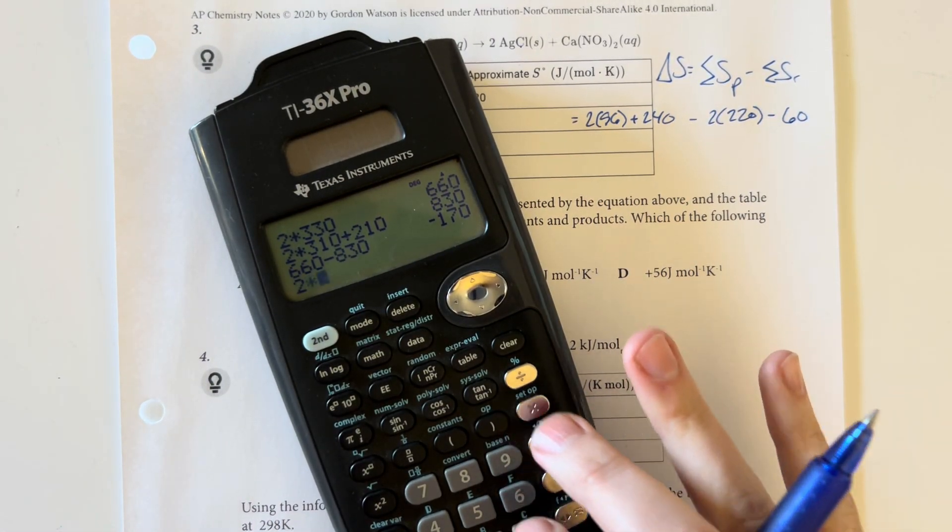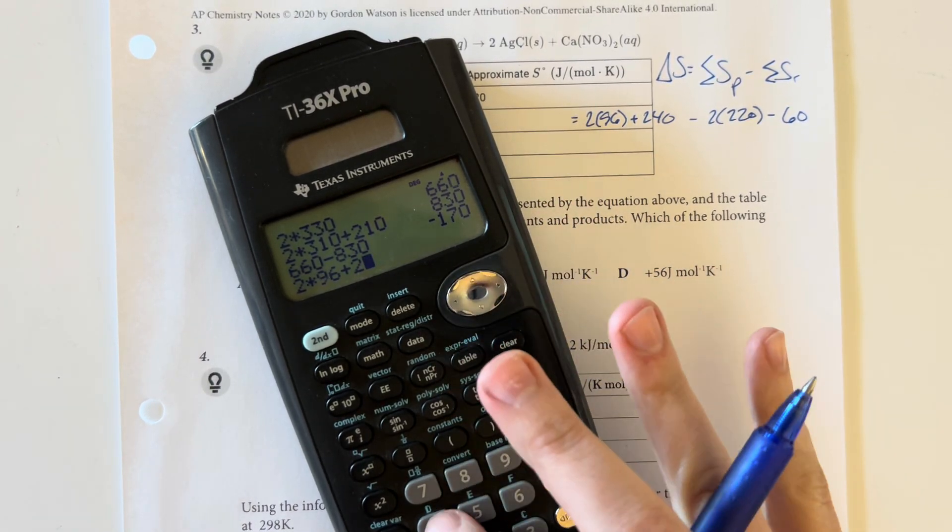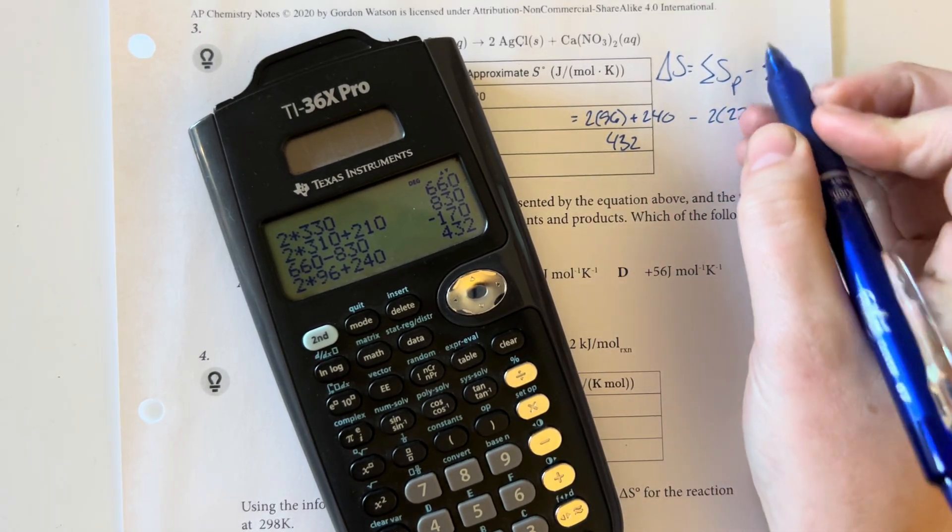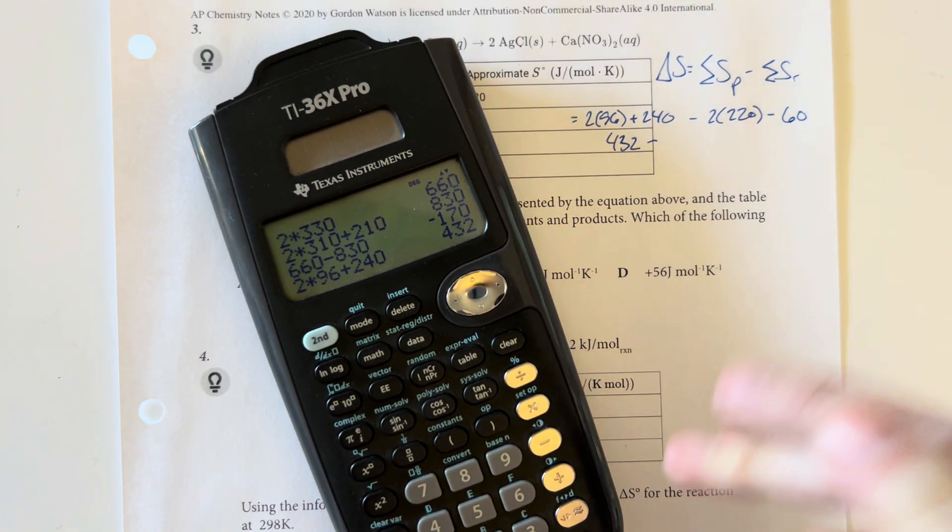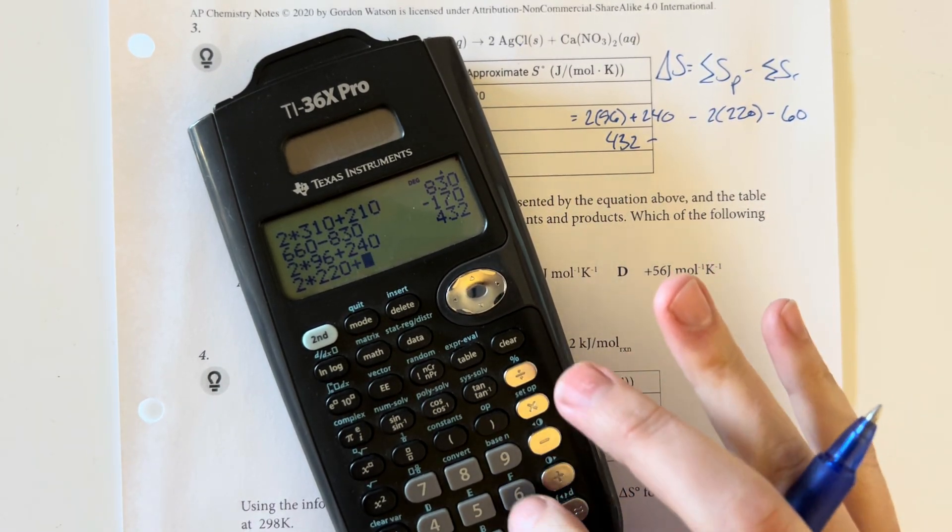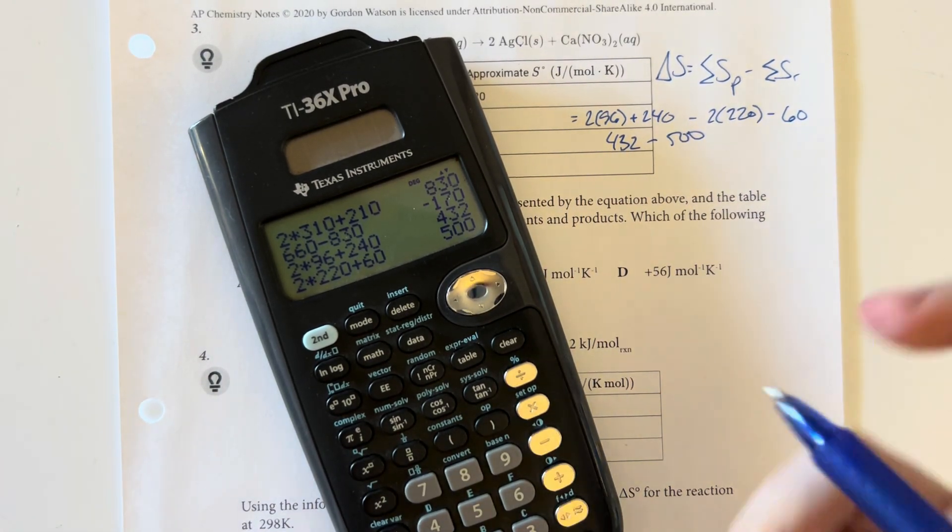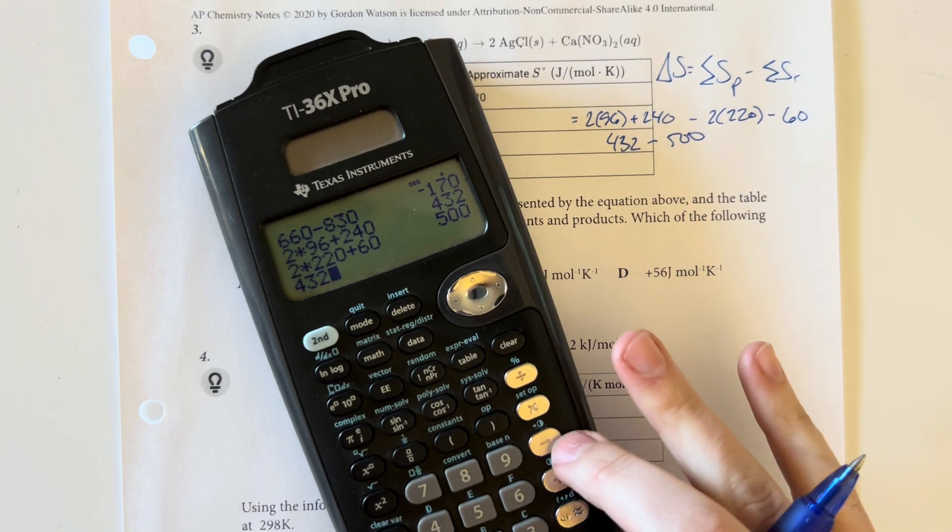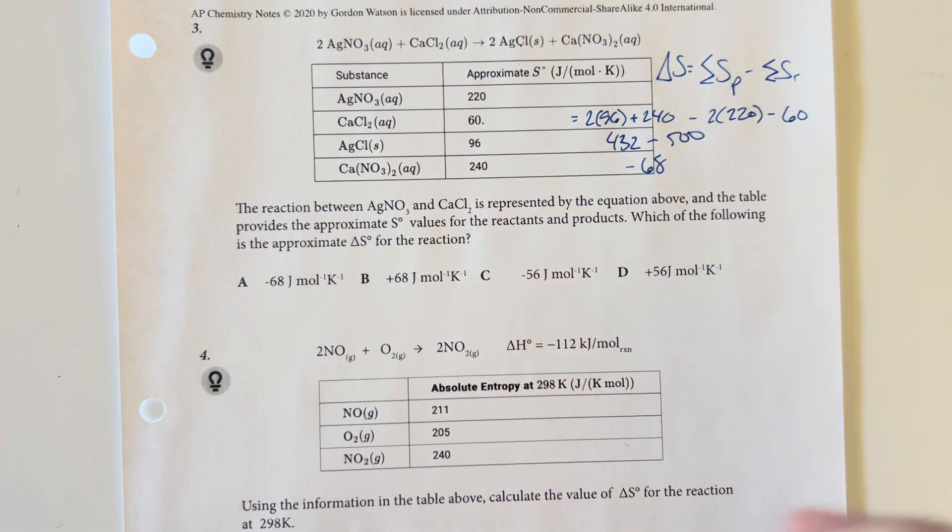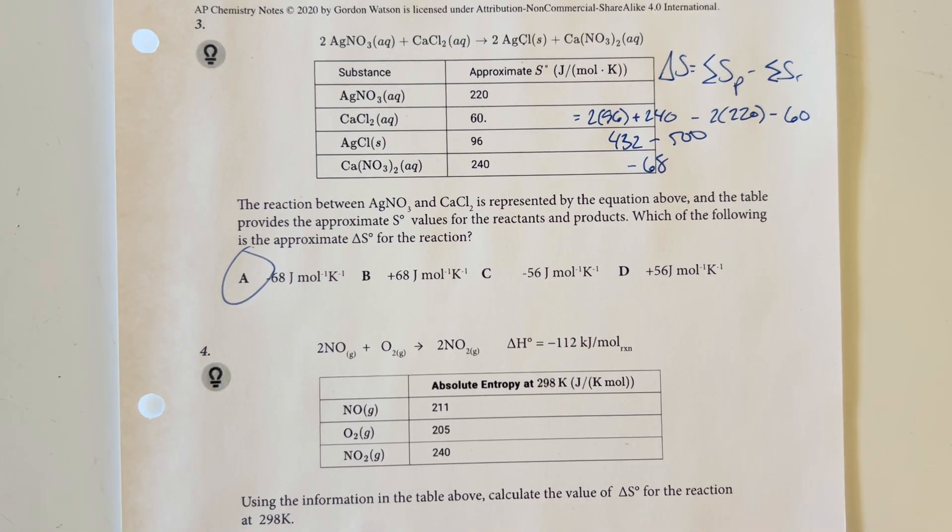2 times 96 plus 240 gave me 432 for the entropies for my products. 2 times 220 plus 60 gave me 500 for my reactants. 432 minus 500 gave me negative 68, which is answer choice A. That is the answer choice that I would select.